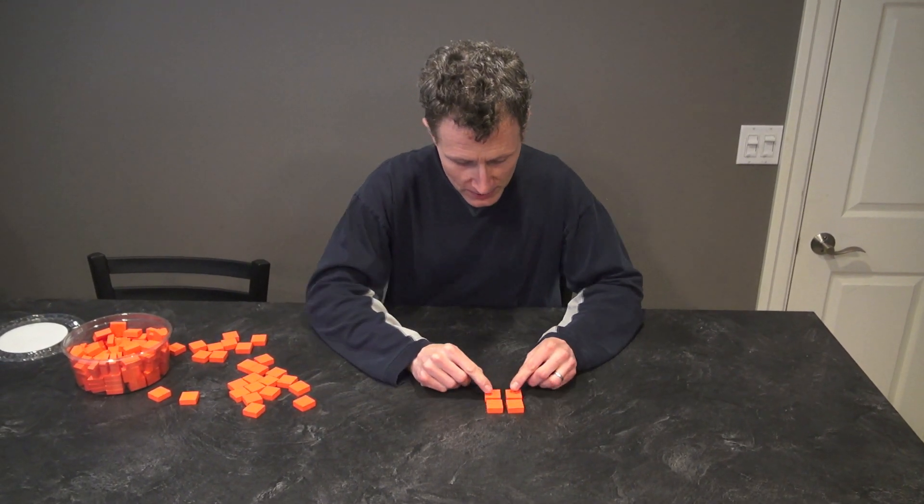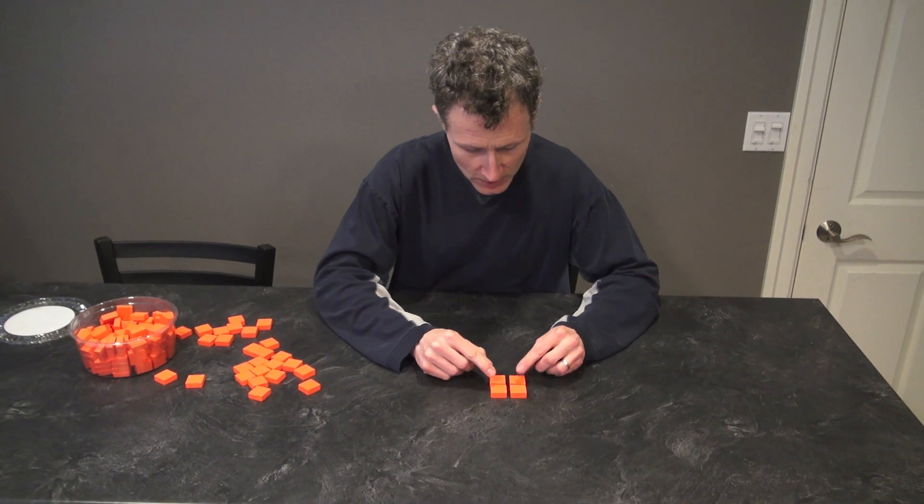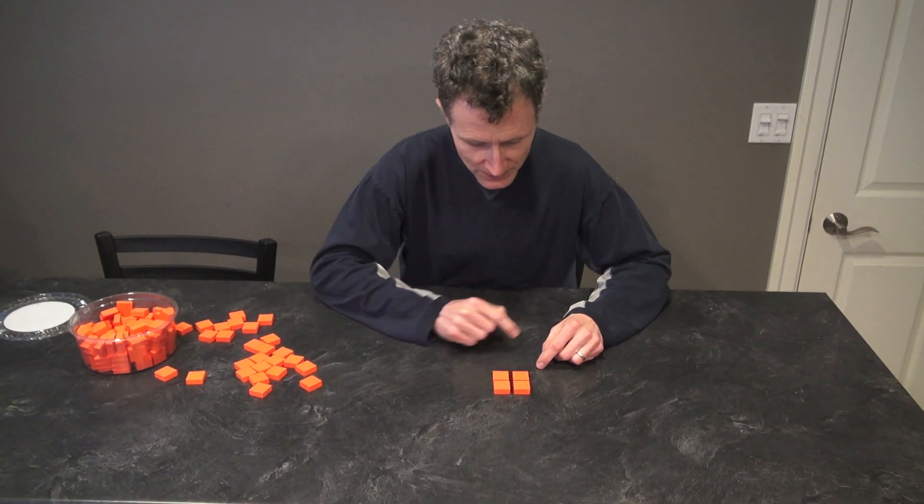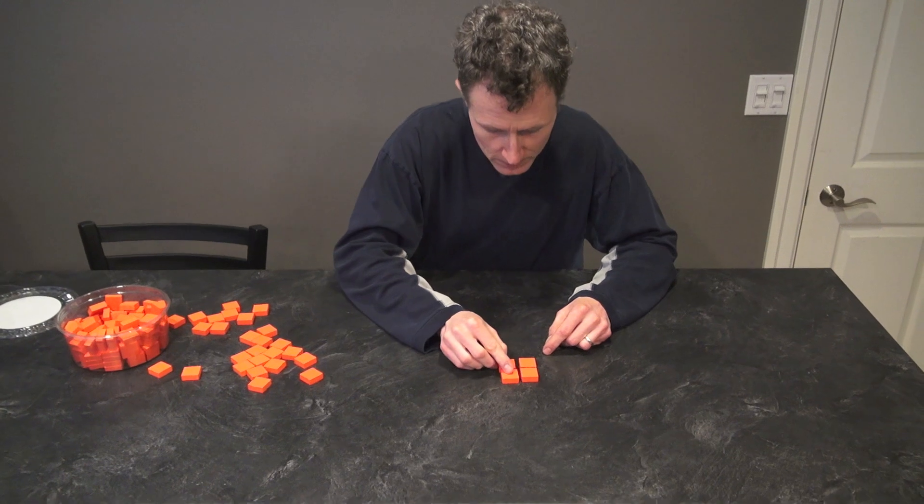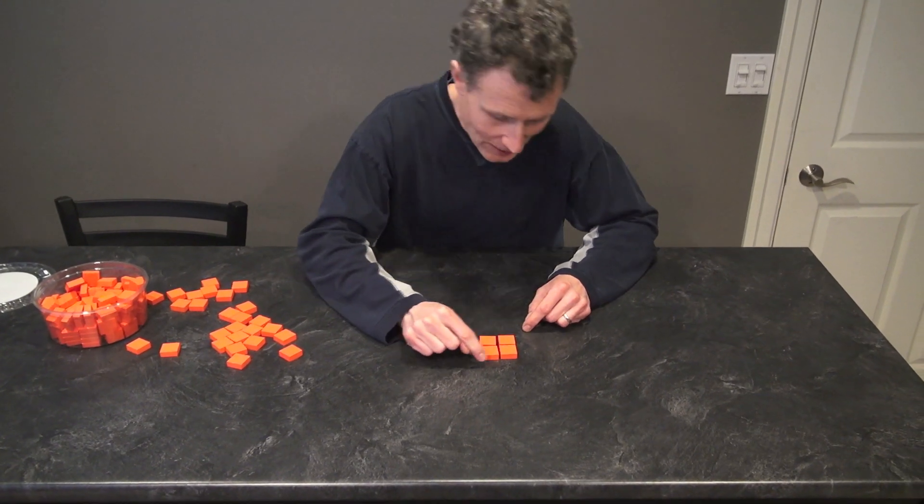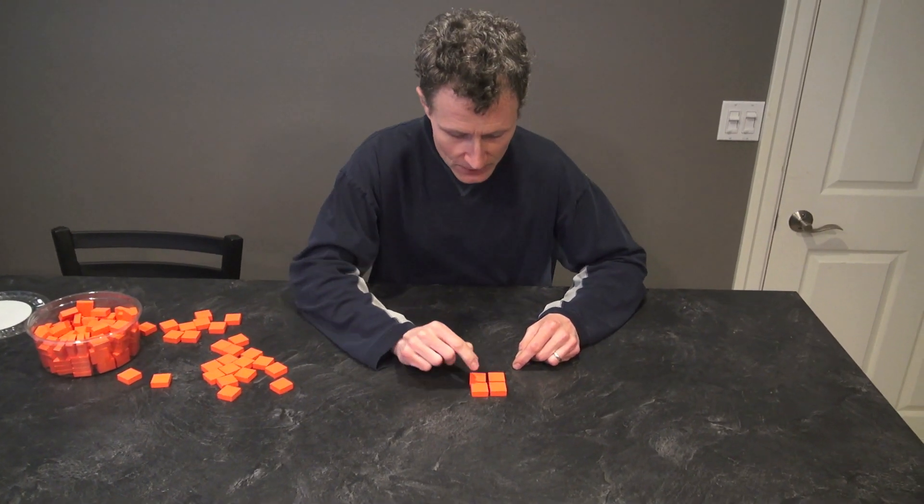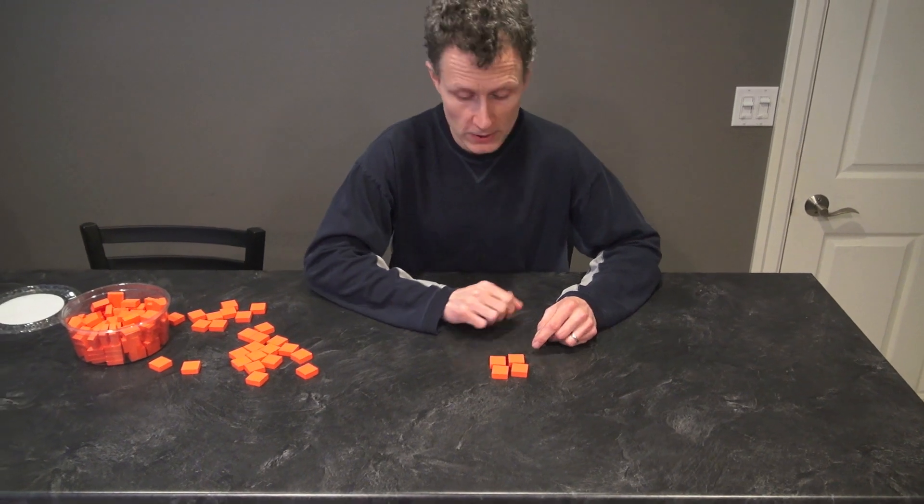Four is a perfect square, right? Because I can make that square that's two by two. The square root of four is two because it's the length of the side of a square that's four square units.